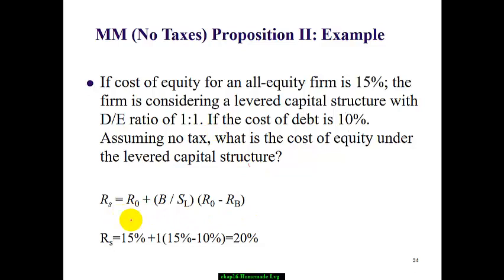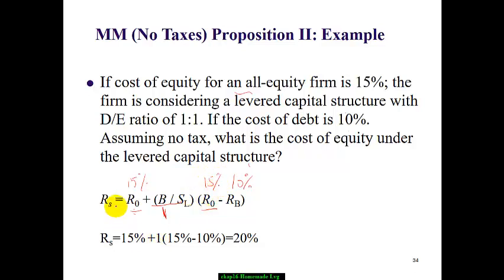We use MM Proposition 2. The debt-to-equity ratio is 1, the cost of debt is 10%. R_0 — the cost of capital for the all-equity firm with no debt — is 15%, as given. Plugging all values into the formula, we find the cost of equity increases from 15% to 20%.